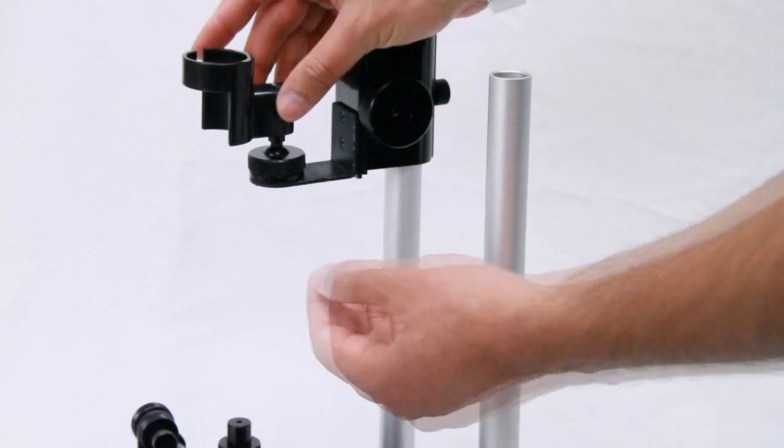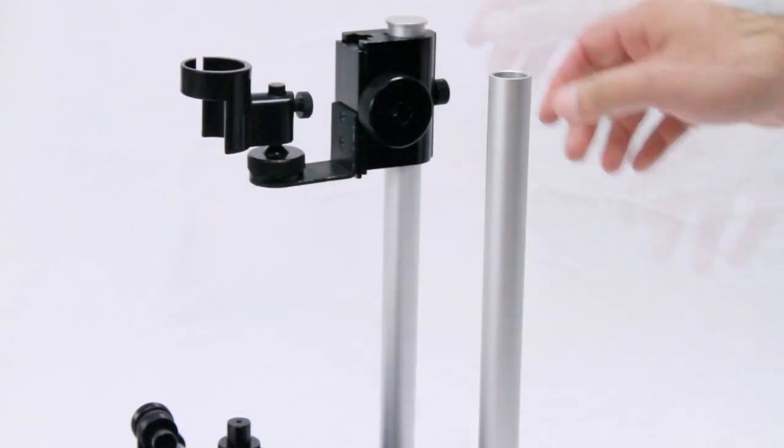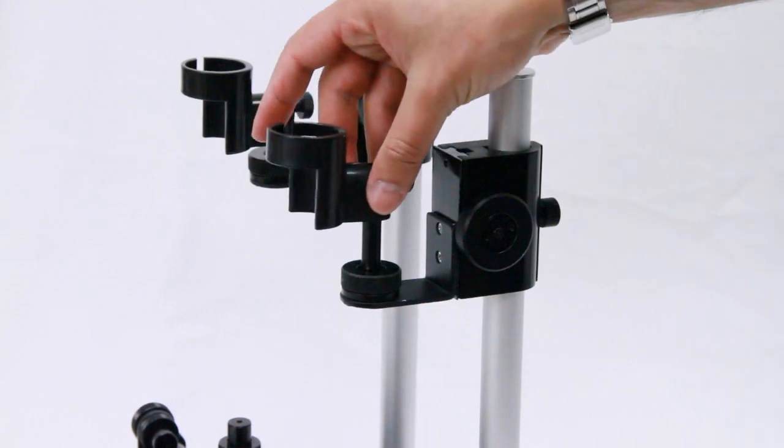Place the included holster onto the peg. The rounded edge is the top. Tighten the rear set screw to secure.